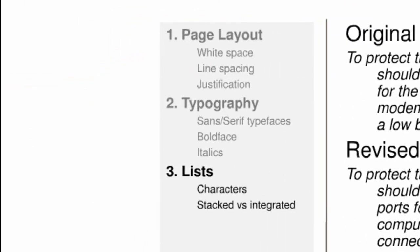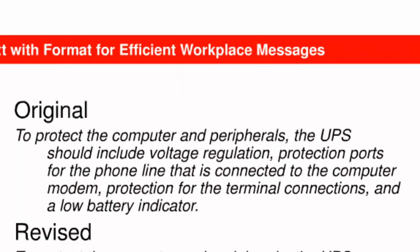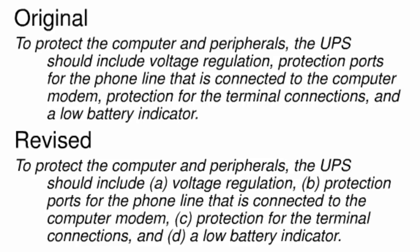The third area of formatting you need to understand is the use of lists. I'll mention two aspects of lists: the characters used to identify items in a list, and the difference between stacked and integrated lists. Look at the passage from another page of the recommendation report — it includes a series of four attributes the writer says should be included in the UPS. The revised version makes it easier for readers to see that there are four attributes, with a character at the beginning of each item, such as lowercase letters with parentheses, numerals, square brackets, etc.